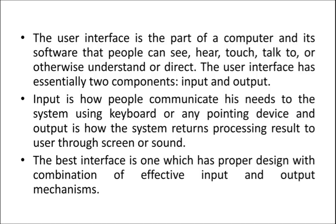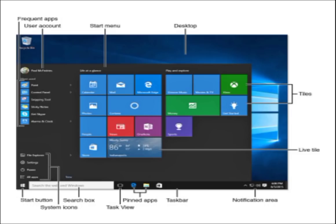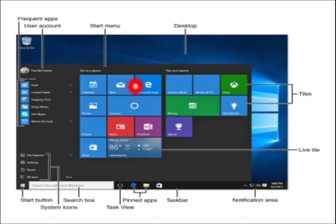One more important thing — if I say user interface, user interface has essentially two components: input and output. To interact with this interface, I need a mouse, a pointing device, or a keyboard. That's why while you are designing the interface, the input is important. What type of input device you are using is important.